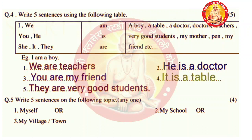Now we will go for question number 4: write 5 sentences using the following table. A chart has been given and we are making sentences with its help. First: we are teachers. Second: he is a doctor. Third: you are my friend. Fourth: it is a table. Fifth: they are very good students. Use the noun, verb, and object from the brackets.